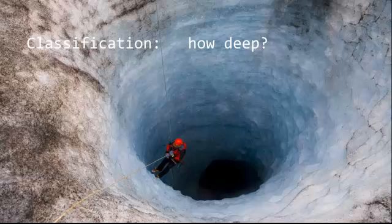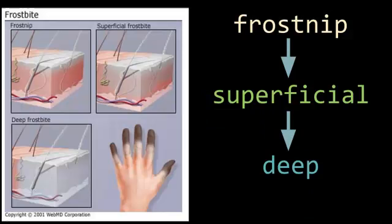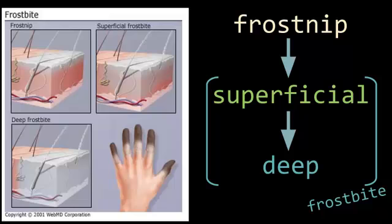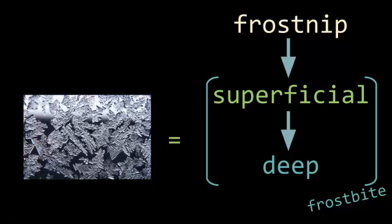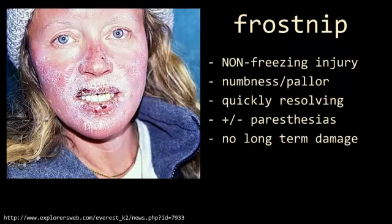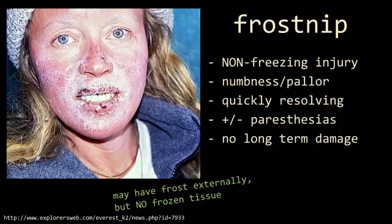Frostbite is classified based on how deep the freeze goes. We have frostnip and then frostbite, which is separated into superficial and deep. The difference between frostnip and frostbite is that frostbite involves actually frozen tissue. Frostnip is a non-freezing injury — you get numb, some pallor, and it resolves pretty quickly on rewarming, though you can have some paresthesias during rewarming. Either way, there's no long-term damage to the tissues.